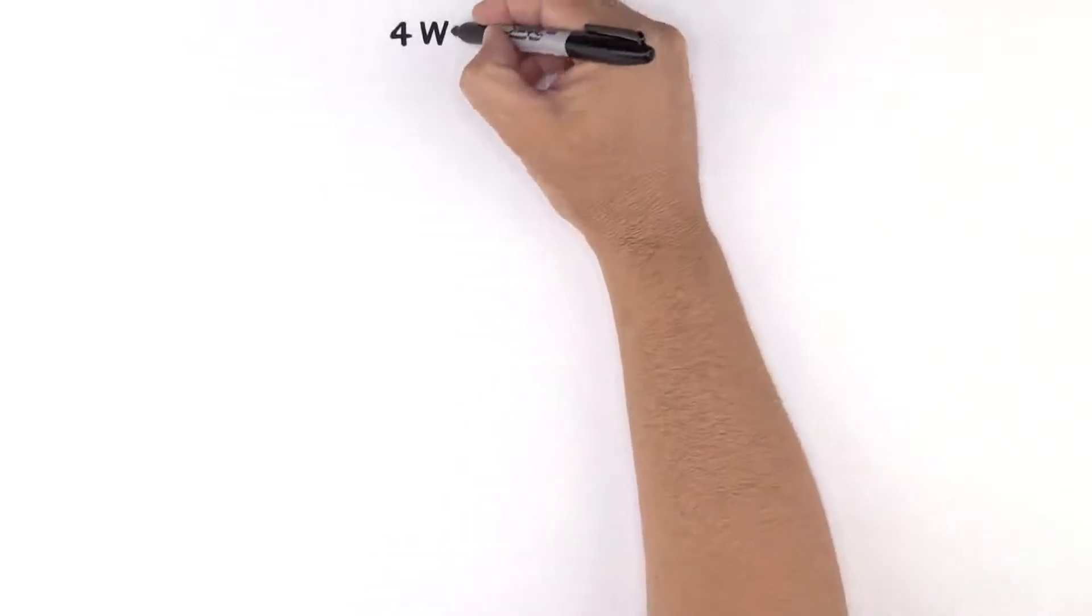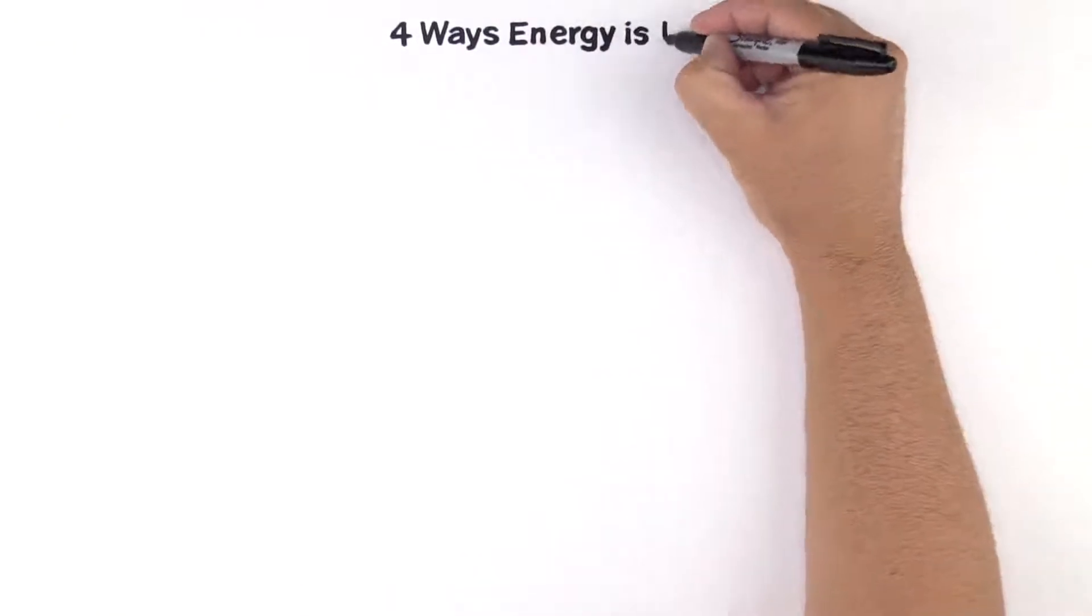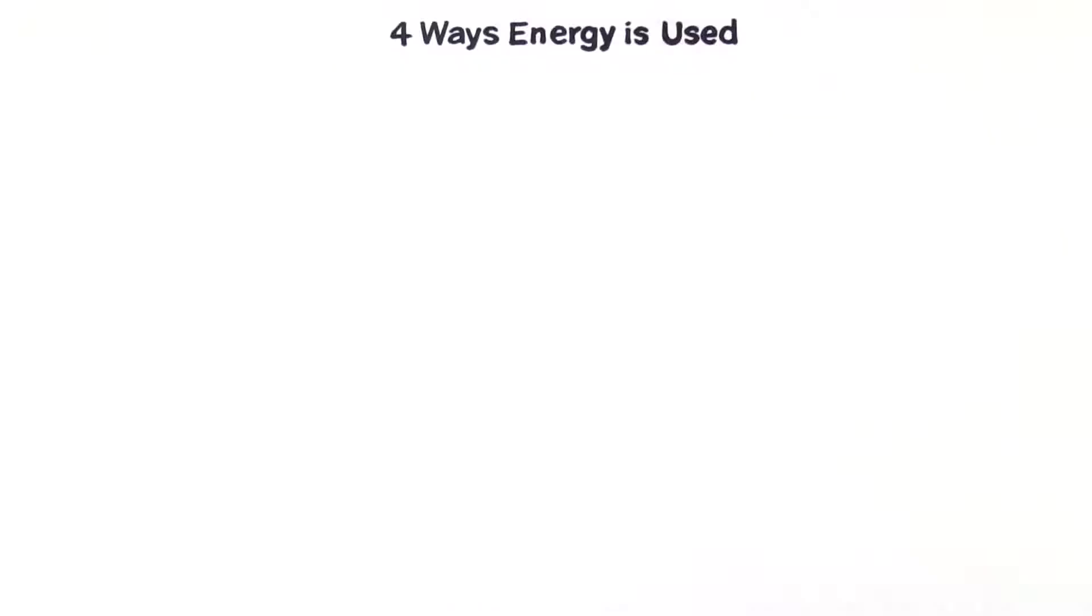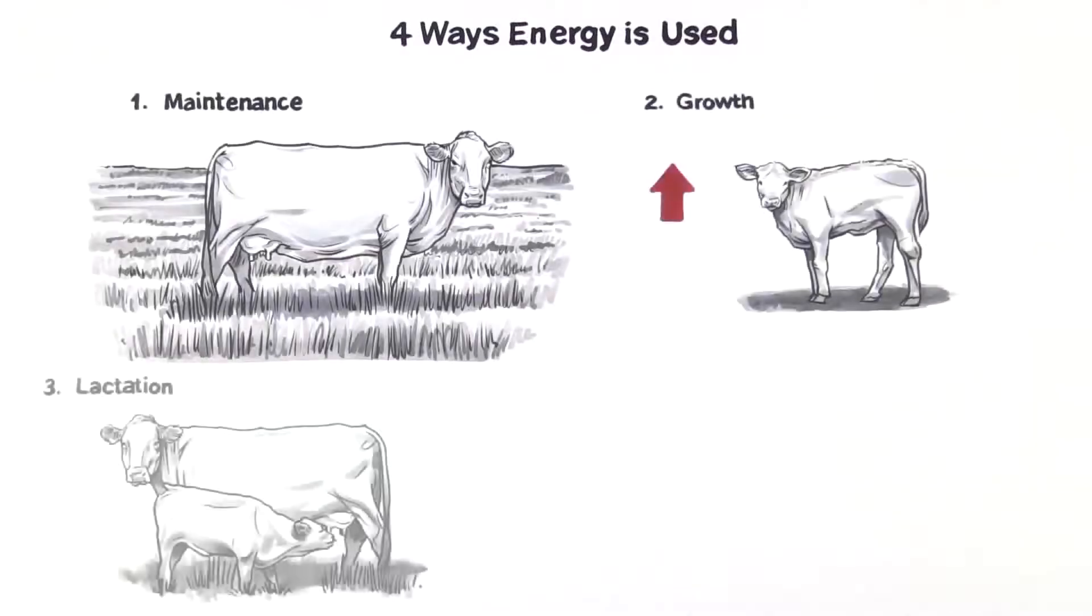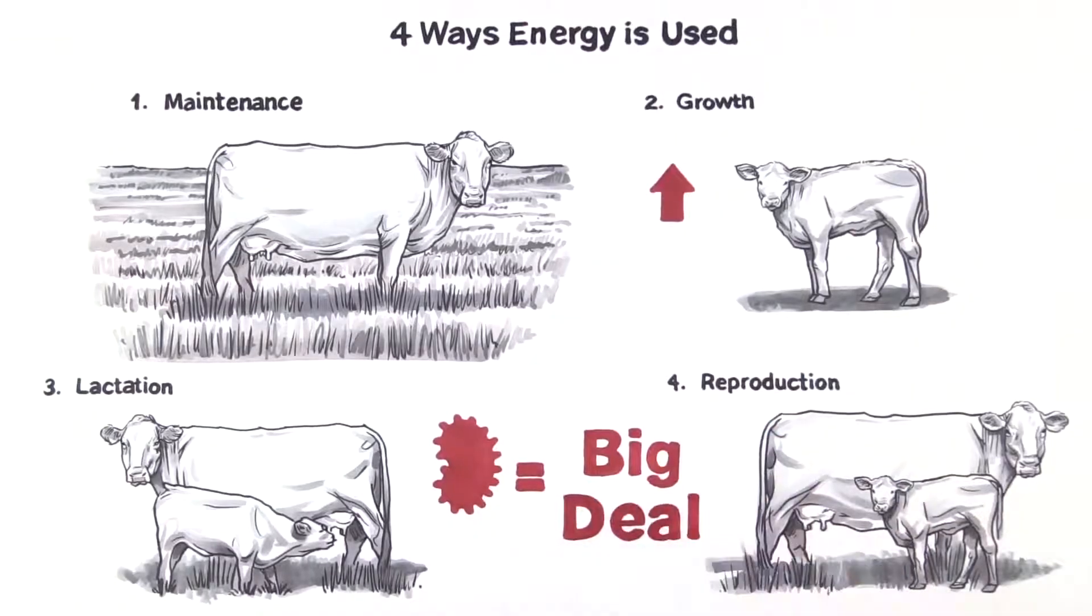These bugs are needed to digest feed and produce volatile fatty acids, or VFAs, which are used by the cow as energy. This energy is used for maintenance, growth, lactation, and reproduction, making these tiny bugs a very big deal.